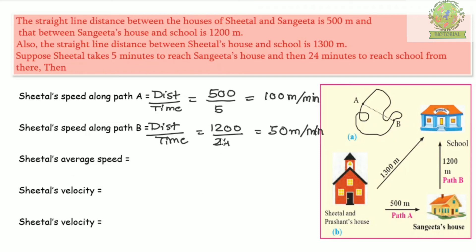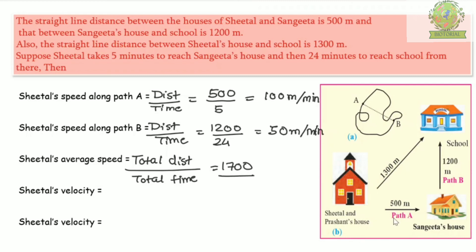For average speed, the formula is total distance divided by total time. Total distance = 500 + 1200 = 1700 meters. Total time = 5 + 24 = 29 minutes. So average speed = 1700 / 29 = 58.6 meters per minute.